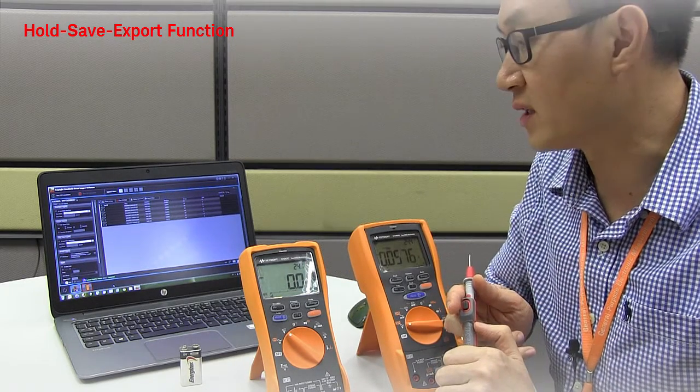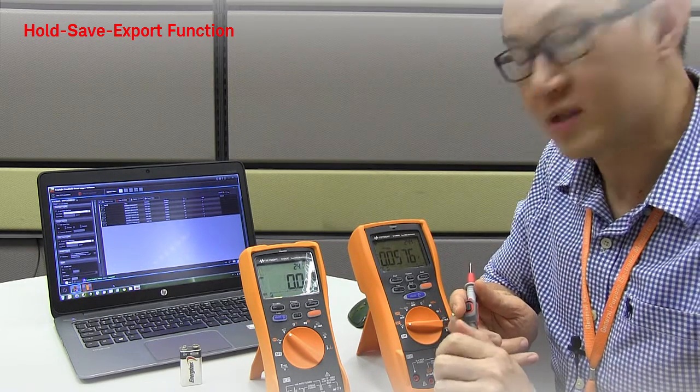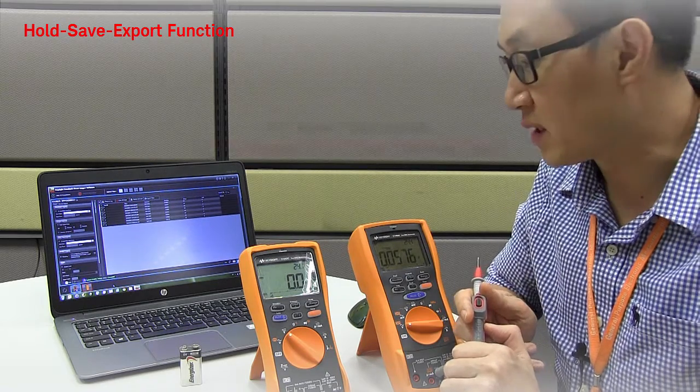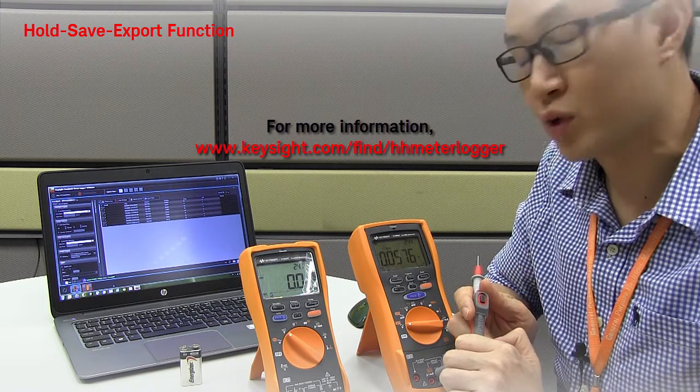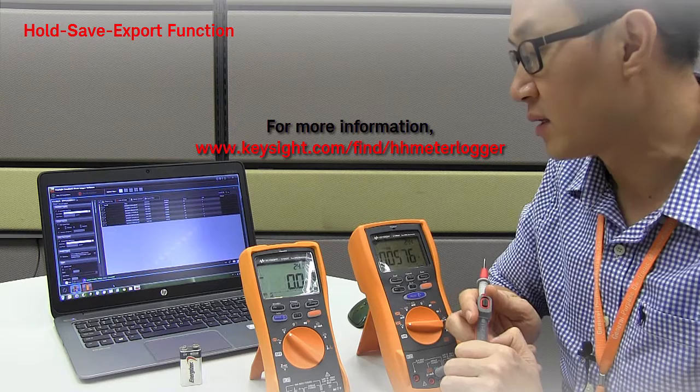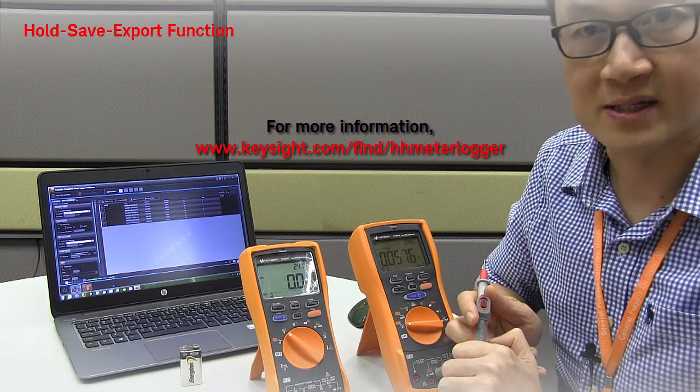So that concludes my demo of the hold save and export functions of the new U1281A and U1282A handheld multimeters from Keysight. Thanks.